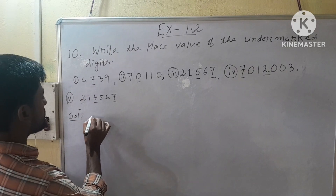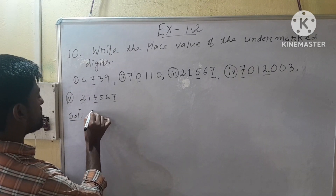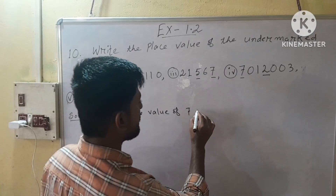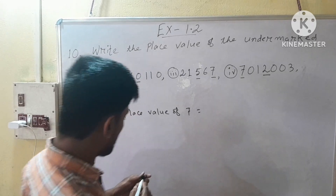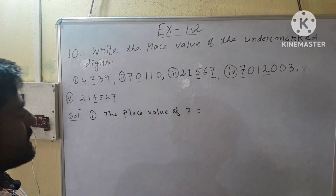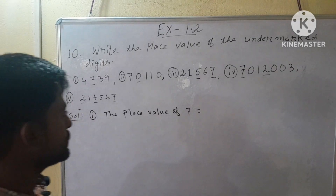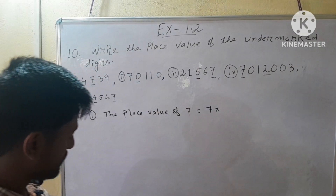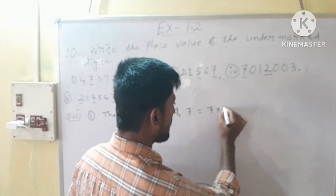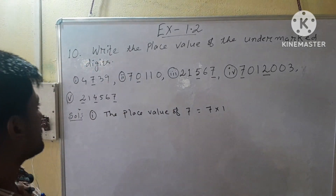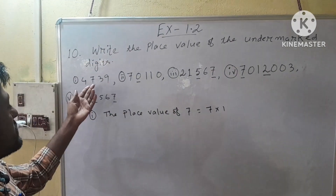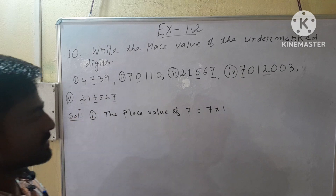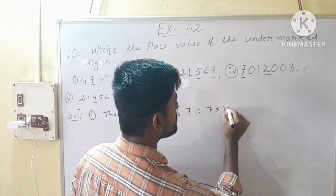The place value of 7 is equal to 7 into 1. After 7 we have here 2 digits, so we have to put here 2 zeros.